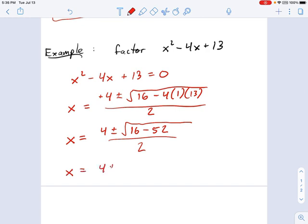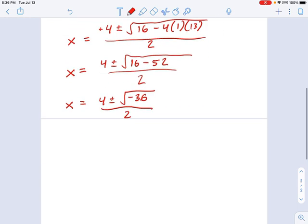So, x equals 4 plus or minus the square root of negative 36. There's one of those square roots of a negative that we hate so much. But now we know how to deal with it because we know complex numbers. So, I would say x equals 4 plus or minus, what's the square root of 36? 6. What's the square root of negative 1? i.